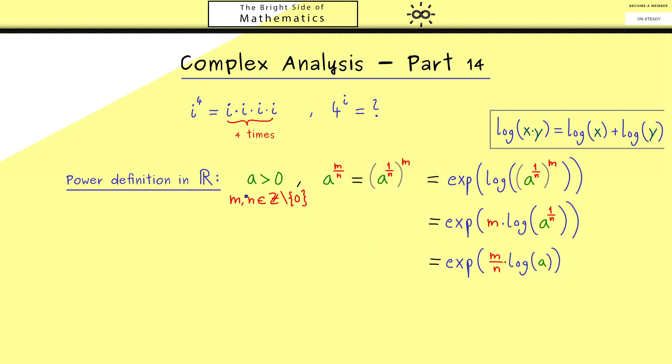Therefore, we can extend the right-hand side to every irrational number as well. This means we have a straightforward definition for a to the power x - it's defined to be the exponential function of x times the logarithm of a. This definition works for every real number x. With this definition, we close the gaps in the real number line to get a continuous function.